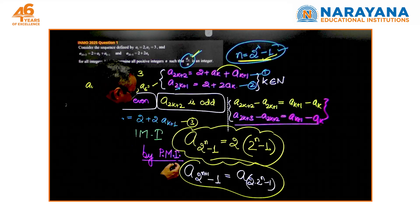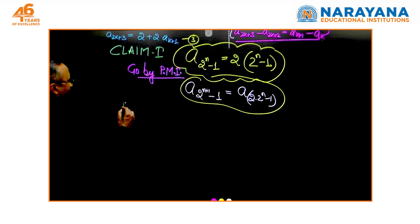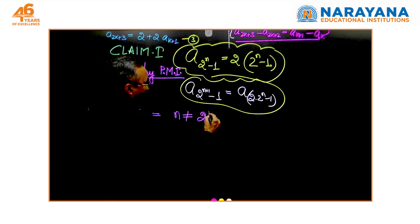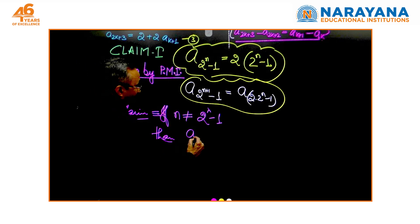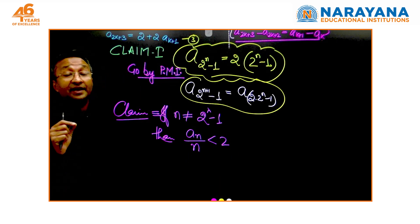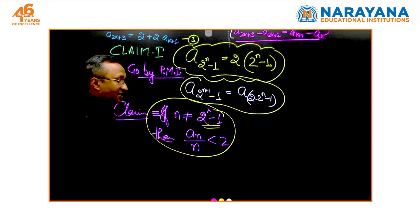The next claim that we are going to make is, if n is not of the form 2^λ - 1, an/n is less than 2, and once again we will use principle of mathematical induction. If n is not of the form 2^λ - 1, an/n is less than 2.